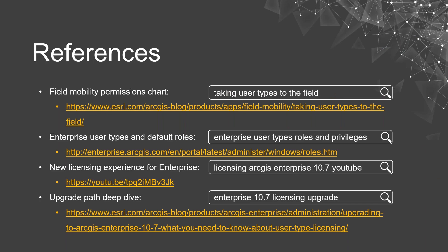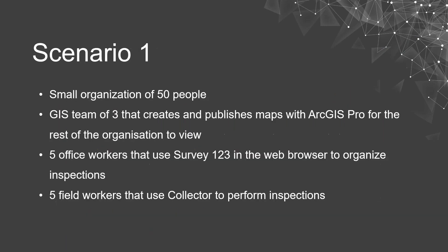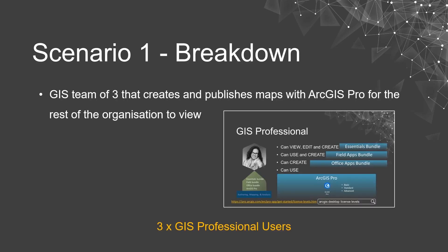Let's run through a couple of scenarios. Our first scenario: a small organization of 50 people. There is a GIS team of three that creates and publishes maps with ArcGIS Pro, five office workers that use Survey123 in the web browser to organize inspections, and five field workers that use Collector to perform inspections. For the GIS team of three who create and publish maps with ArcGIS Pro, the GIS professional user type is perfect — it has all the privileges of a creator and comes with an ArcGIS Pro license.